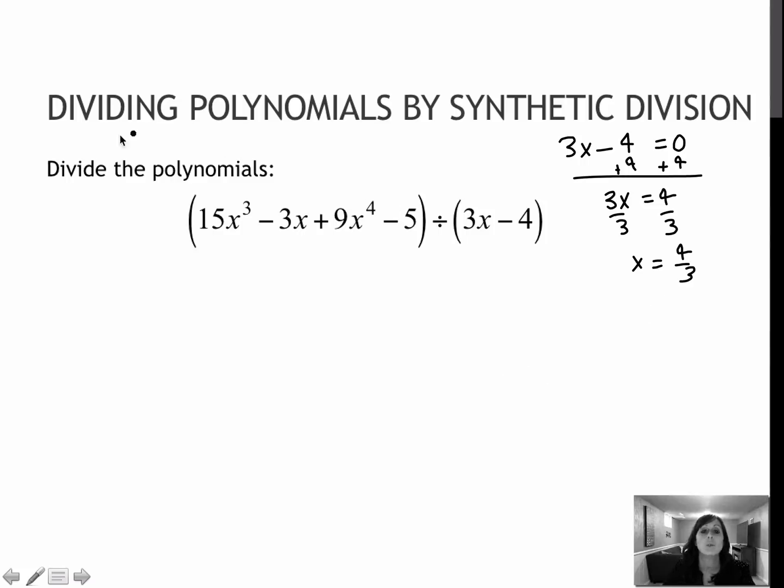So unfortunately, when you do any kind of synthetic division and you have a value in front of your x here, you will end up with a fraction. So it's up to you whether or not it's worth it. I'm going to put the 4 thirds here. I'm going to follow those same rules by putting this in standard form. So I'm going to use a 9 here, I'm going to use a 15 here, I'm going to use a 0 as a placeholder for my 0x squared, and then negative 3 and negative 5.